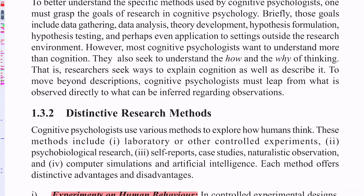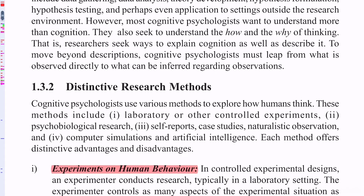How do humans think? The methods used include: first, laboratory or other controlled experiments; second, psychobiological research; third, self-reports, case studies, and naturalistic observation; fourth, computer simulation and artificial intelligence. Each method offers distinctive advantages and disadvantages.